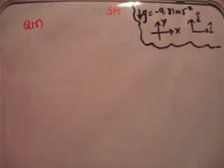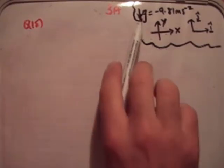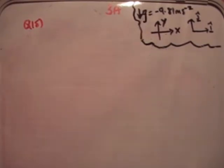Alright so this question actually isn't too bad. It's very similar to a lot of questions we've done so far. So I'll just do this again. The first thing you're going to need to notice is that g is 9.81 metres per second squared in this direction. We're talking about our xy plane, our Cartesian plane and we've also defined our i-hat and j-hat unit vectors.